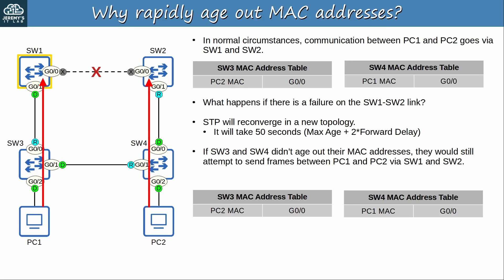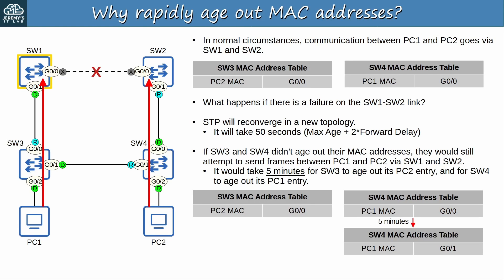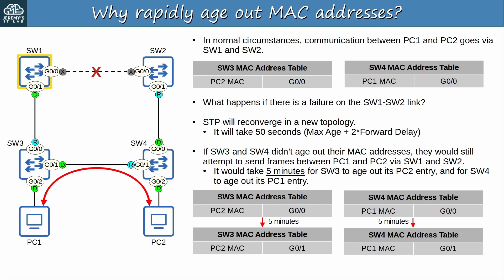SW3 still thinks it can reach PC2 via G0/0, and SW4 still thinks it can reach PC1 via G0/0. Because SW3 sends PC1's frames to PC2 out of G0/0, they don't reach SW4, and SW4 doesn't update its MAC address table entry for PC1. The same applies for SW3's MAC address table entry for PC2. It would take 5 minutes for SW3 to age out its PC2 entry, and for SW4 to age out its PC1 entry. After SW3 ages out its PC2 entry, it will flood the frames PC1 sends to PC2, allowing SW4 to relearn its entry for PC1. Likewise, when SW4 ages out its entry for PC1, it will flood the frames PC2 sends to PC1, allowing SW3 to relearn its entry for PC2. PC1 and PC2 can now communicate, however it took 5 minutes in total.